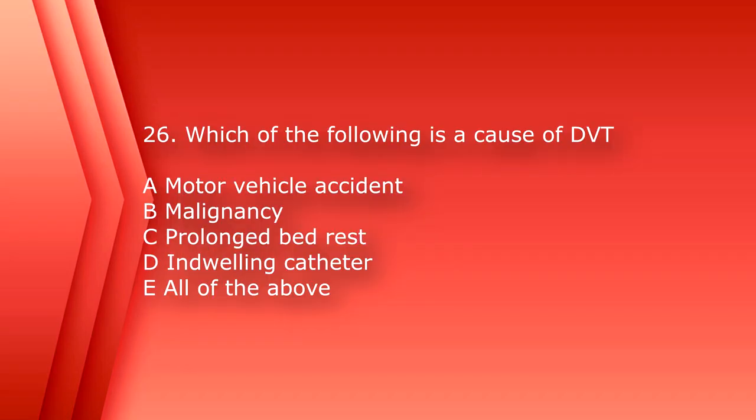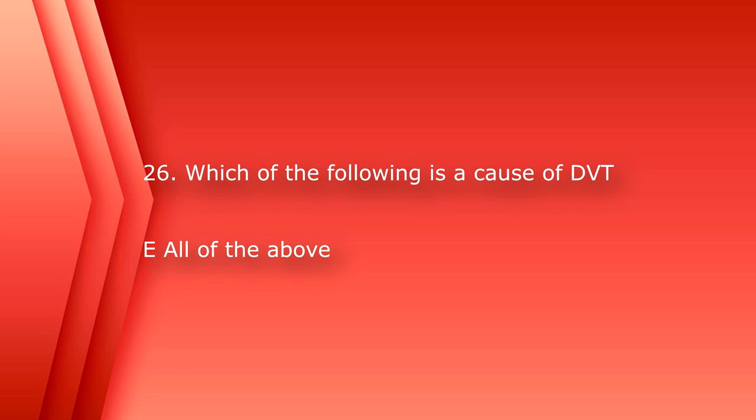Continuing where we left off, number 26: which of the following is a cause of DVT? A. Motor Vehicle Accident, B. Malignancy, C. Prolonged Bed Rest, D. Indwelling Catheter, or E. All of the above. The answer is E, all of the above.